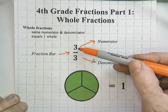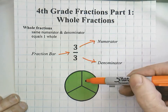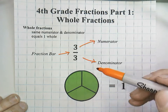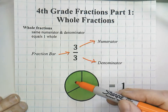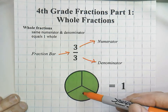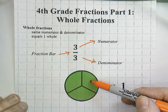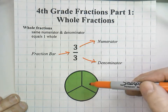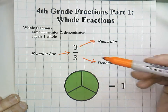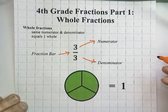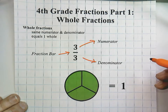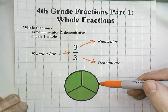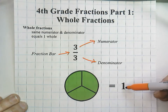For example, we would read this fraction as 3 thirds, and it's modeled here. You can see that in the circle we have 1, 2, 3 total pieces — that's our denominator — and 1, 2, 3, all of them are shaded green. The main lesson we want to walk away with today is that a whole fraction is always equal to one whole.